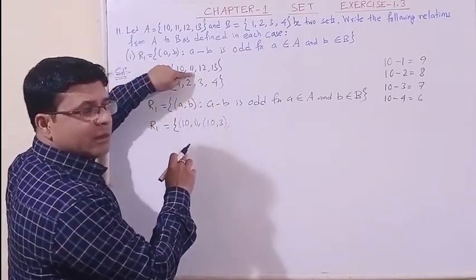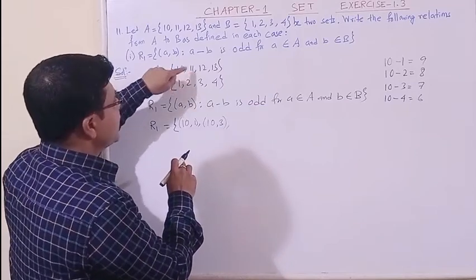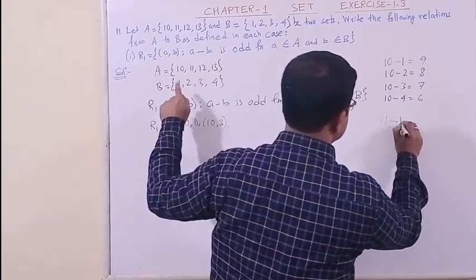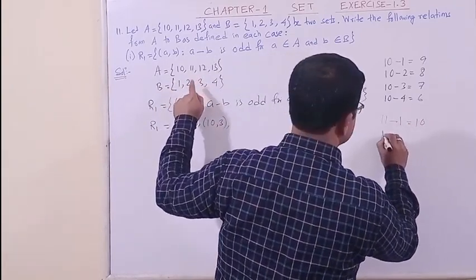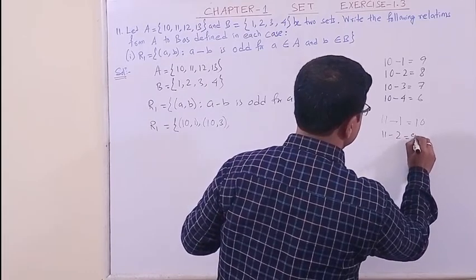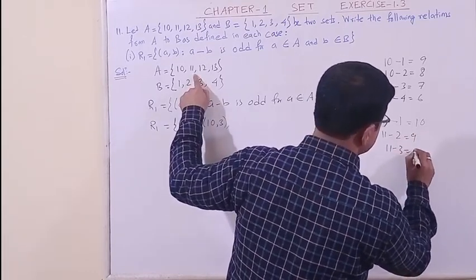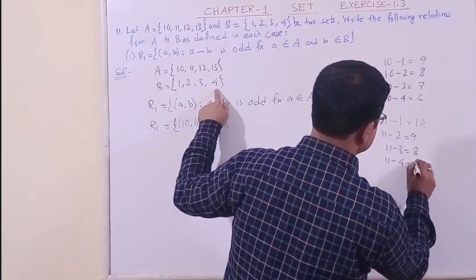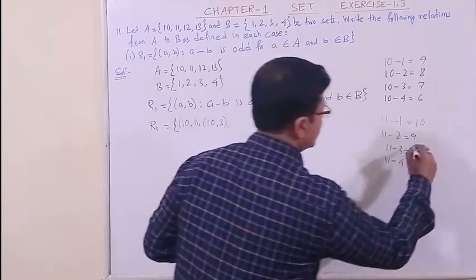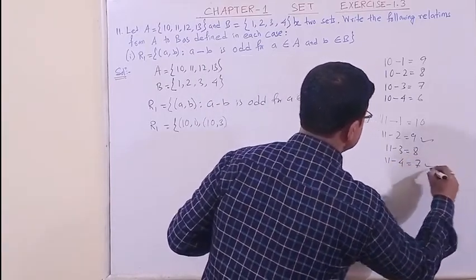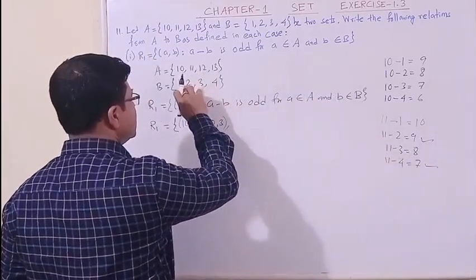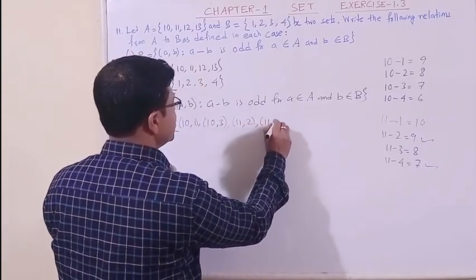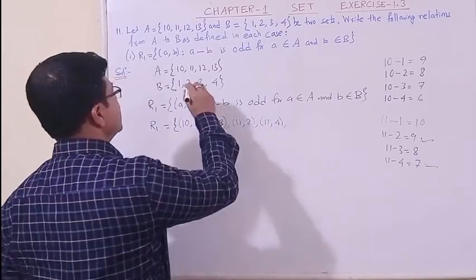Now take 11. 11 is an odd number, so odd minus even. 11 minus 1 is 10, 11 minus 2 is 9, 11 minus 3 is 8, 11 minus 4 is 7. So the odd ones are these two. Odd minus even gives odd. So the pairs are (11, 2) and (11, 4).